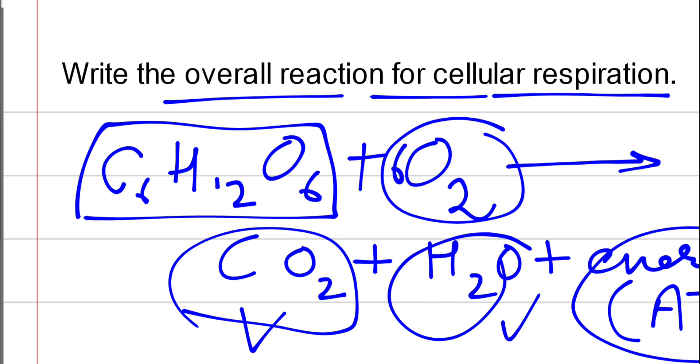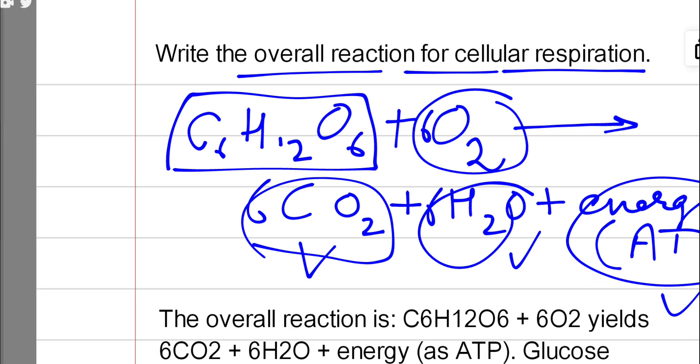it by six. We can make it 6O2, and we can multiply water by six. So now this is the balanced overall reaction of cellular respiration, and I hope you understood.